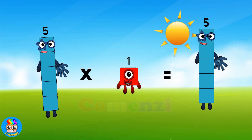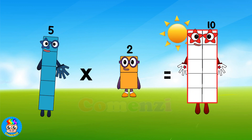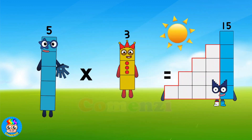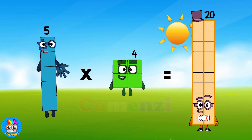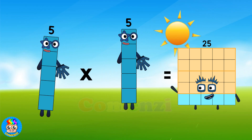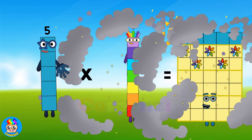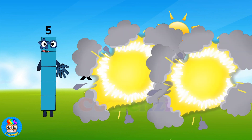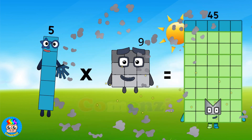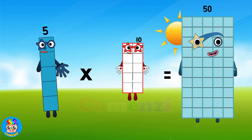5 times 1 is 5, 5 times 2 is 10, 5 times 3 is 15, 5 times 4 is 20, 5 times 5 is 25, 5 times 6 is 30, 5 times 7 is 35, 5 times 8 is 40, 5 times 9 is 45, 5 times 10 is 50.